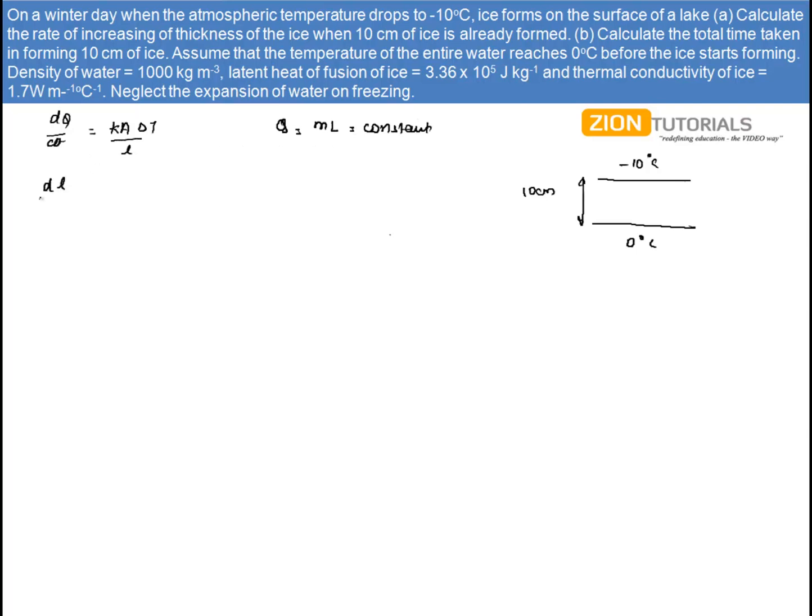So I can write dL by dt equals KA delta T by rho L, which can be written as delta T by mL.